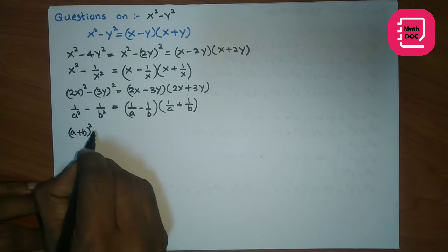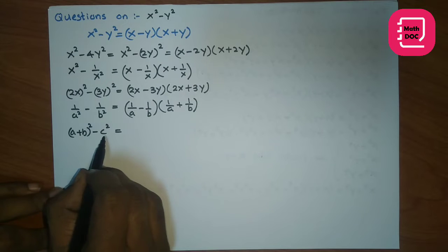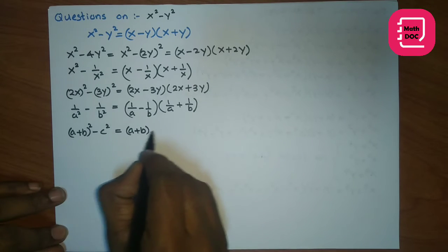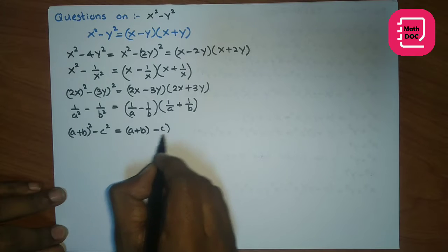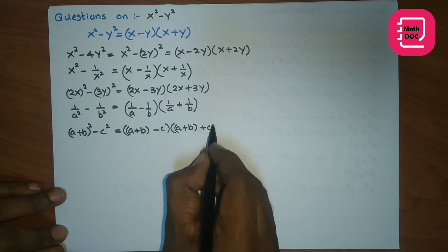a plus b squared minus c-squared. Here we can see difference of two squares pattern. Then a plus b squared factors as a plus b minus c times a plus b plus c.